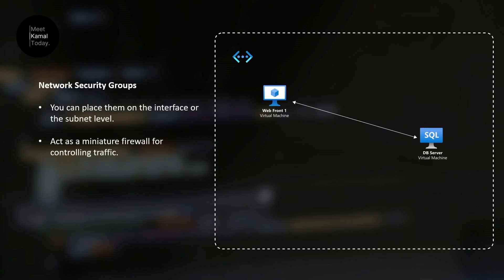Basically, there are two things that you should understand when it comes to network security groups. You can place them on network interface level or the subnet level, and they act as miniature firewalls for controlling traffic flow to these virtual machines or subnets.